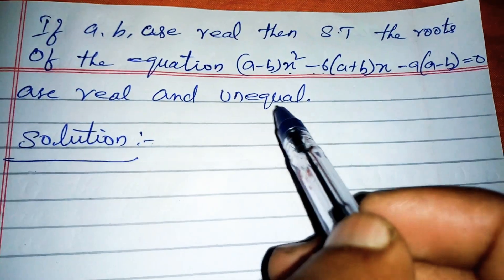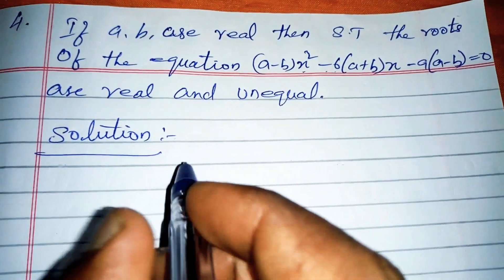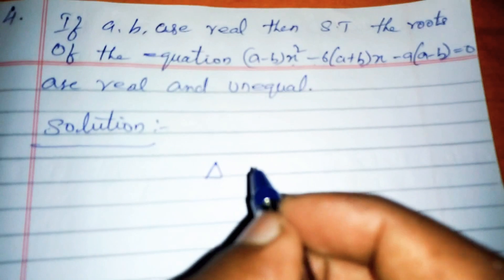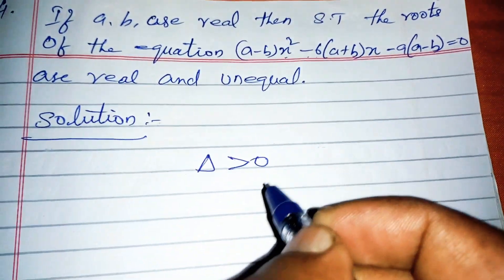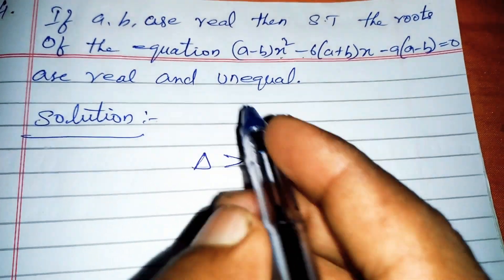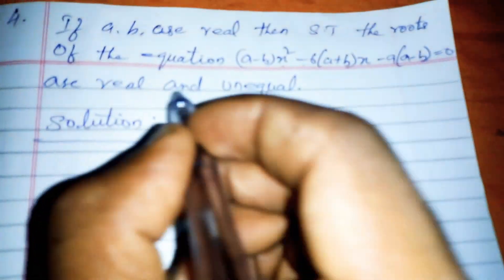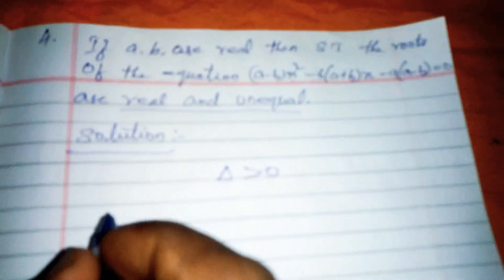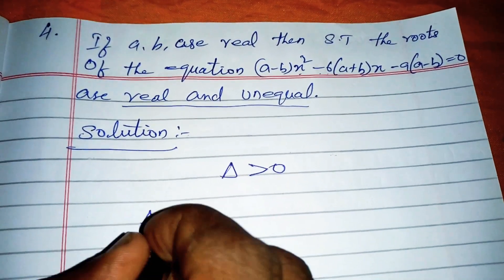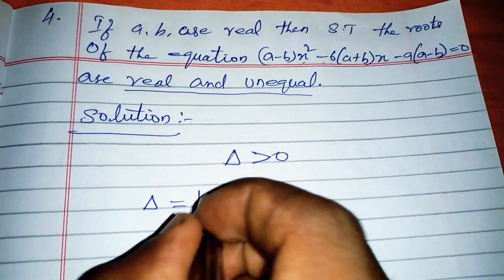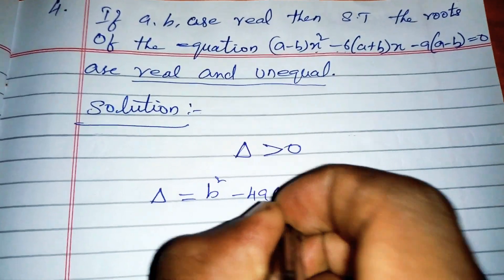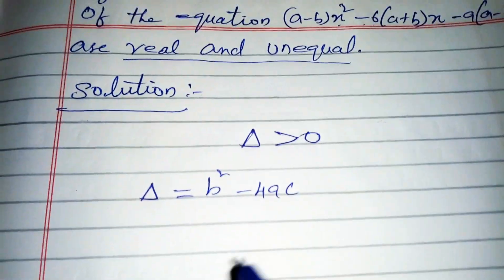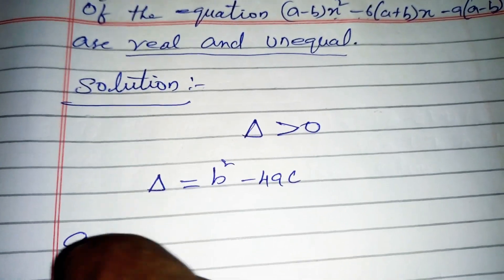Real and unequal means delta greater than 0. So we need to show that delta is greater than zero. The formula for the discriminant is delta equal to b squared minus 4ac.